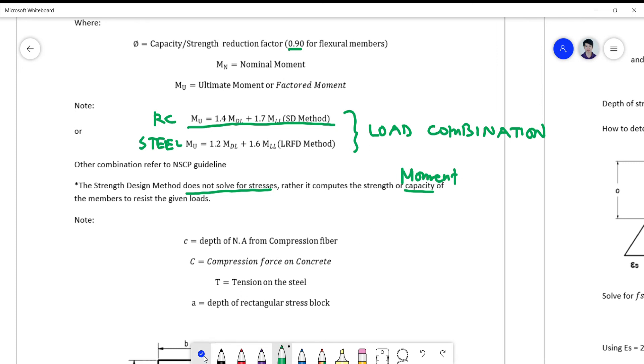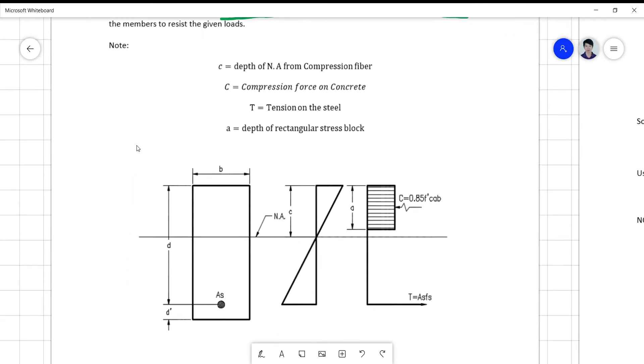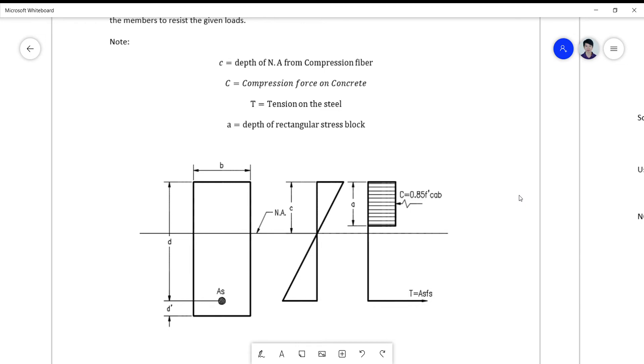So in the strength design method, remember that this does not solve stresses, rather it computes capacity or the moment capacity. Let's have some figure here. In the concept of strength design, the transform section method is not needed. We'll have to take note of the section of the member, the strain distribution based on compatibility, so this is the strain compatibility, and this is the stress diagram.